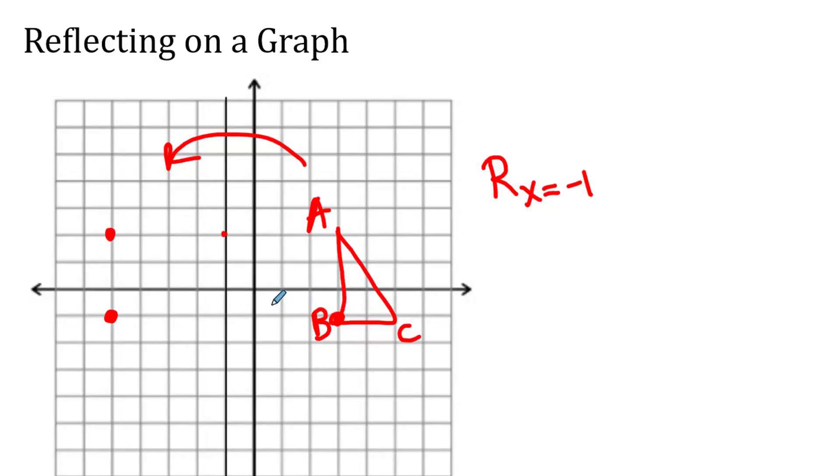we got 1, 2, 3, 4, 5, 6. So we're going to go 1, 2, 3, 4, 5, 6, which is all the way over there. That's my reflected image over x equals negative 1.